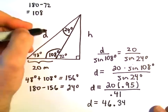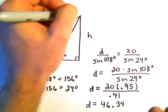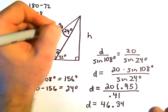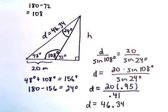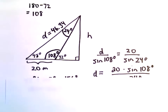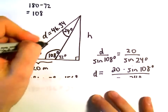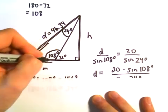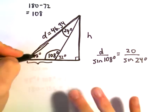So now we know this hypotenuse of the big triangle. We know that that's 46.34 meters. And now, we'll just do the same thing. We can just use the law of sines again. So now, if you look at the big triangle.